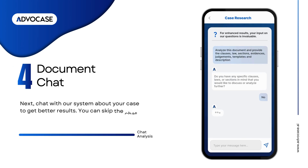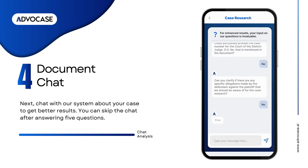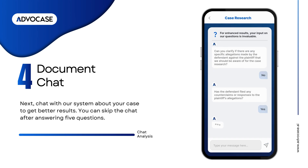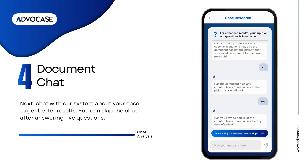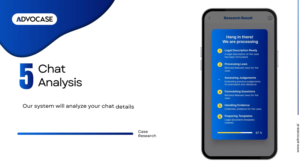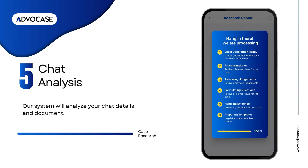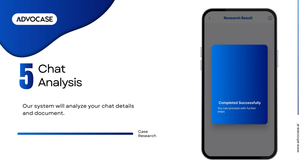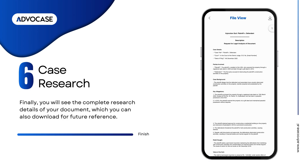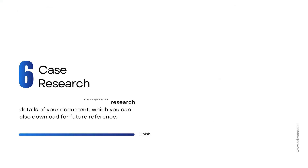Next, chat with our system about your case to get better results. You can skip the chat after answering five questions. Our system will analyze your chat details and document. Finally, you will see the complete research details of your document, which you can also download for future reference.